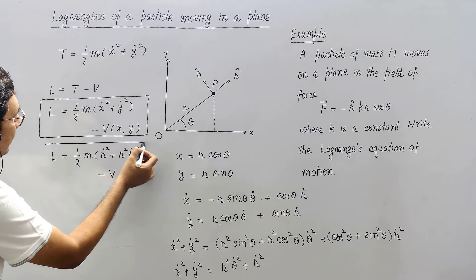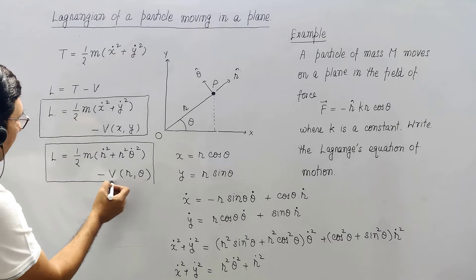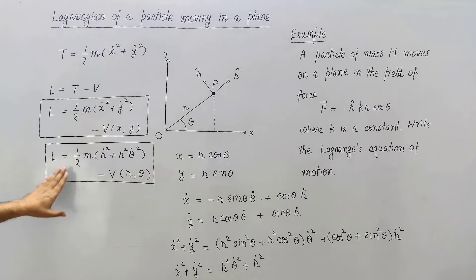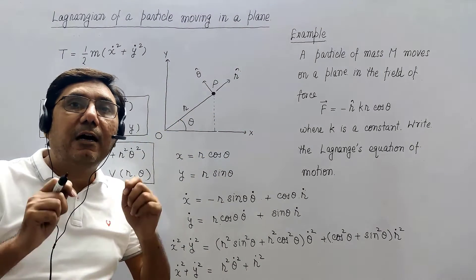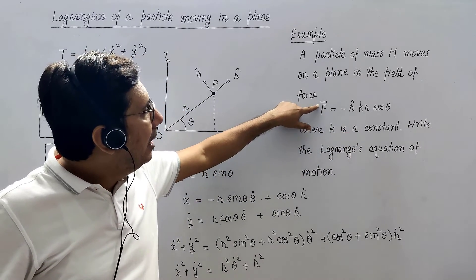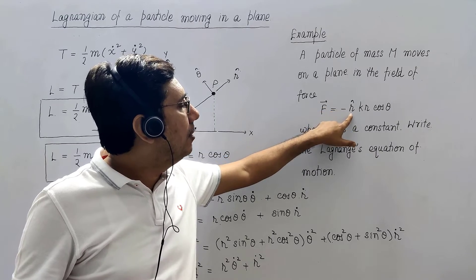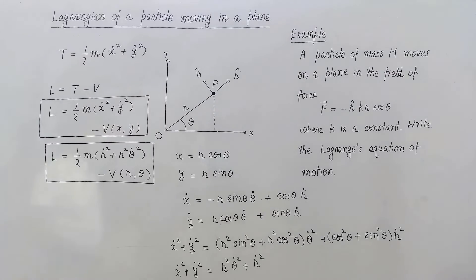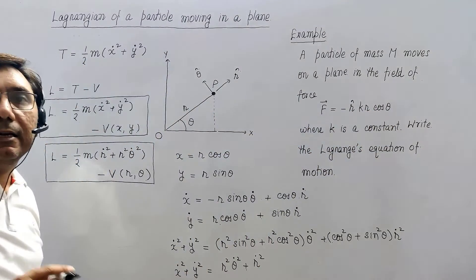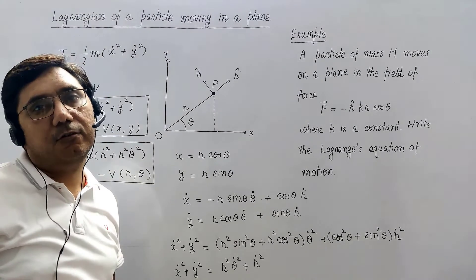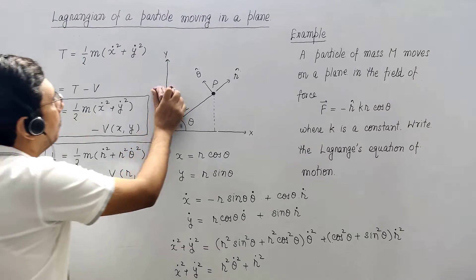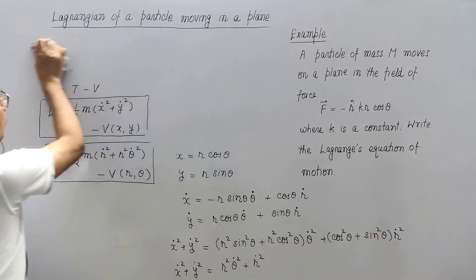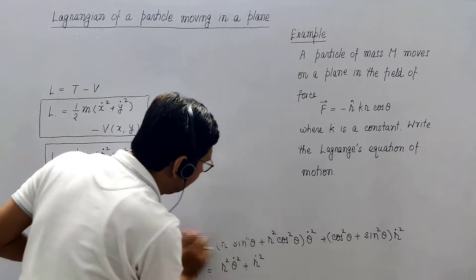Now I am going to consider an example for writing the Lagrangian in polar coordinates. A particle is moving in a plane under the influence of a force given by F = -r-hat times kr cos(theta), where r-hat is the radial polar coordinate direction. We need to find the equations of motion in this case.